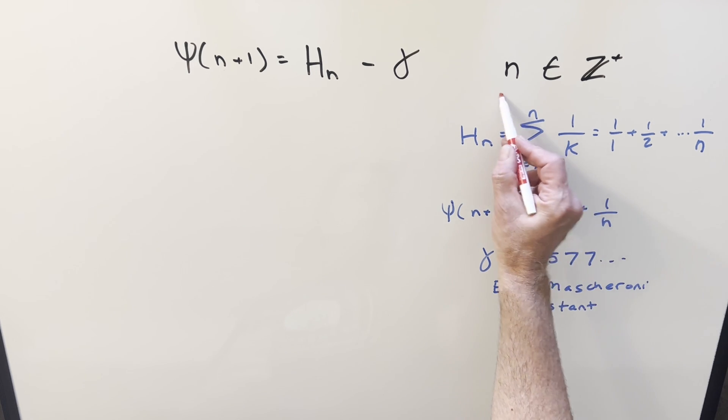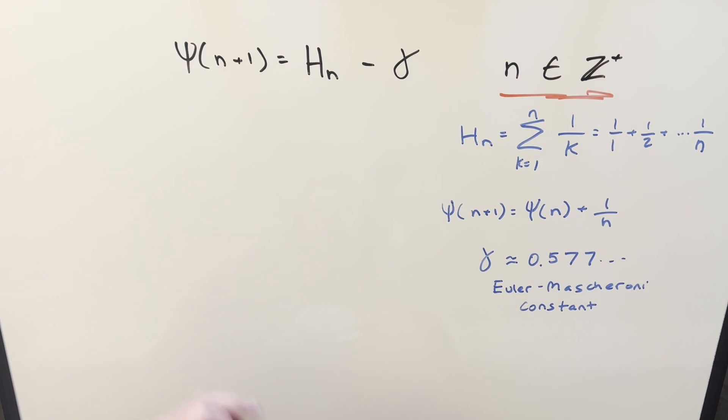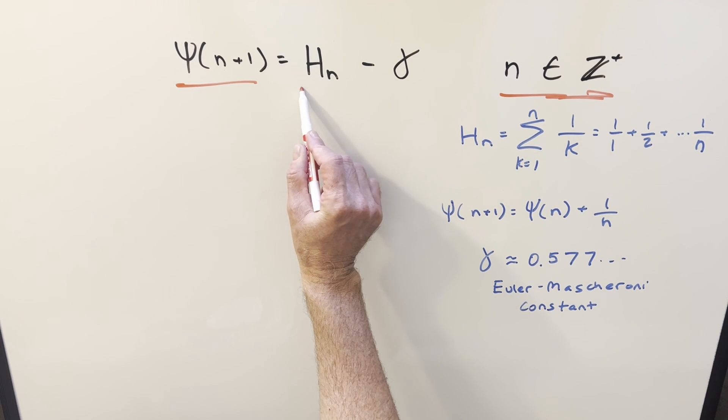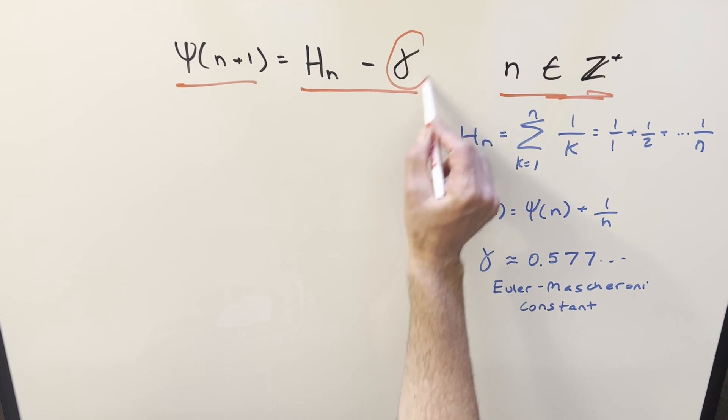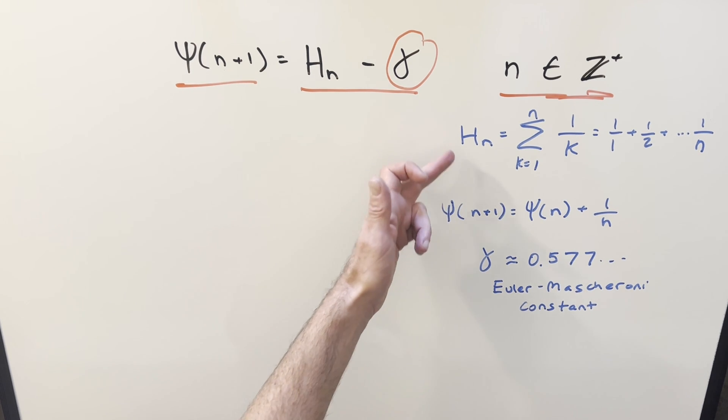We're looking at just positive integers over here on this. We've got our digamma function and we're going to express this in terms of the harmonic numbers and the Euler-Mascheroni constant. So I think all we need for this is a few formulas and definitions over here to the right.